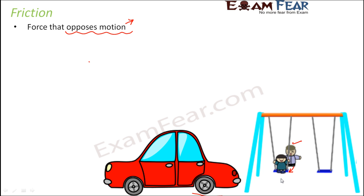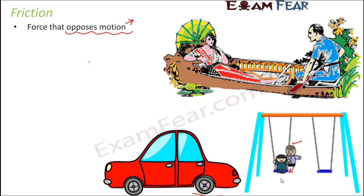This type of force which opposes motion is called friction or frictional force. Take the example of a person who is sailing a boat. In the boat also there is a lot of friction, and in order to overcome the friction, a person continuously needs to sail the boat. There is continuously a frictional force which is trying to stop the boat from moving. So if we want to overcome the frictional force, some extra amount of force needs to be applied — and that is why it is required to sail the boat.